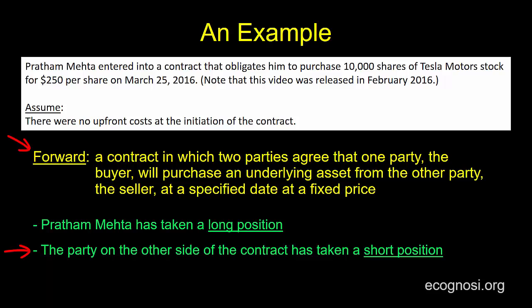In this example, the underlying asset we refer to in the definition is Tesla Motor Stock. The specified date that the two parties will transact in the future is March 25, 2016. And the fixed price they agreed at the initiation of the contract is $250 per share. Let's see in the next video what could motivate the creation of a forward contract.